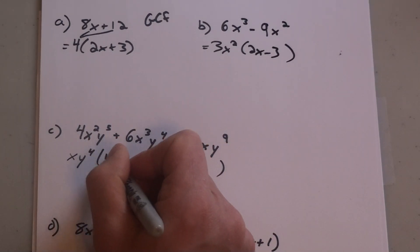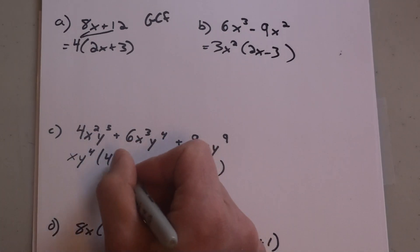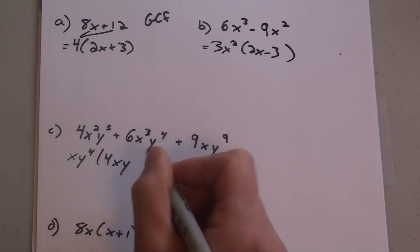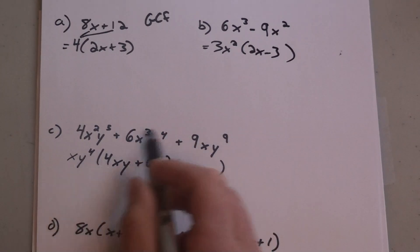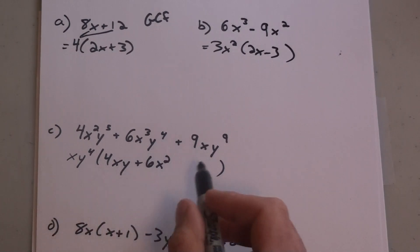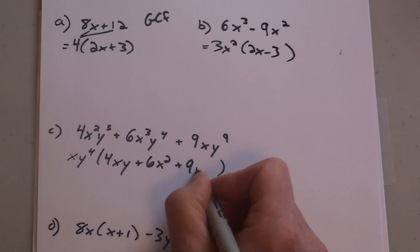When I do that, I'll be left with all my coefficients, but I subtract my exponents. So it's going to be 4xy plus 6x². I'll have no y's left because y⁴ divided by y⁴ is 1, plus 9. I won't have any x left, x divided by x, but I'll have y to the 5.